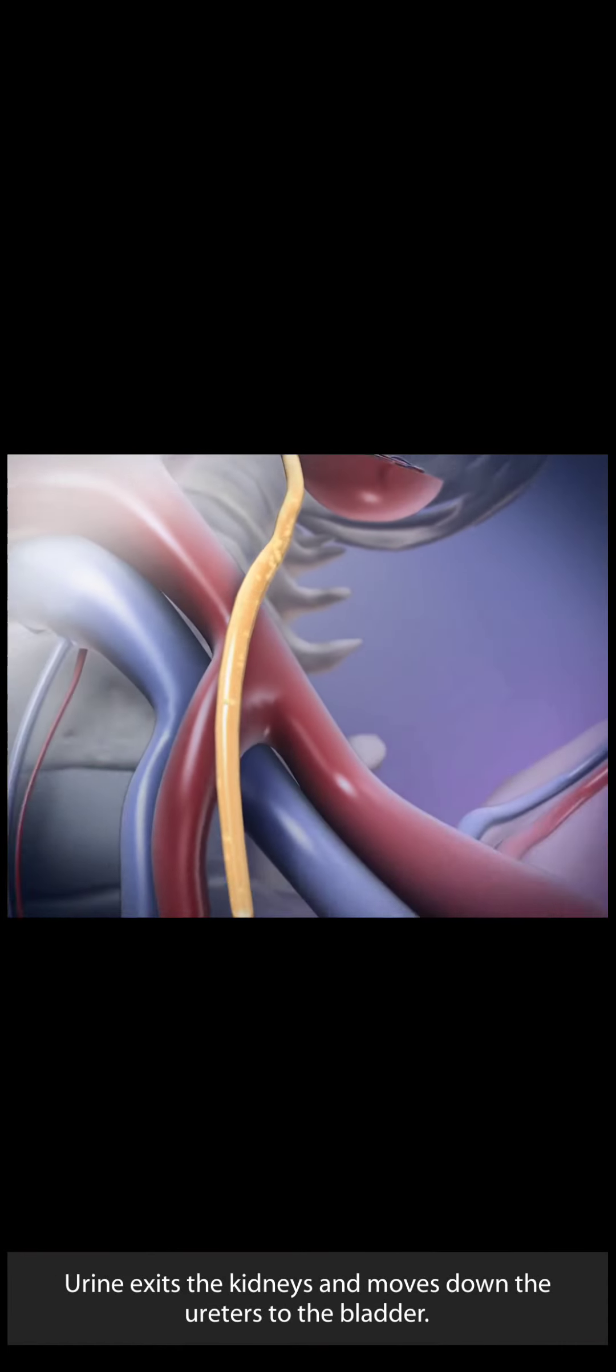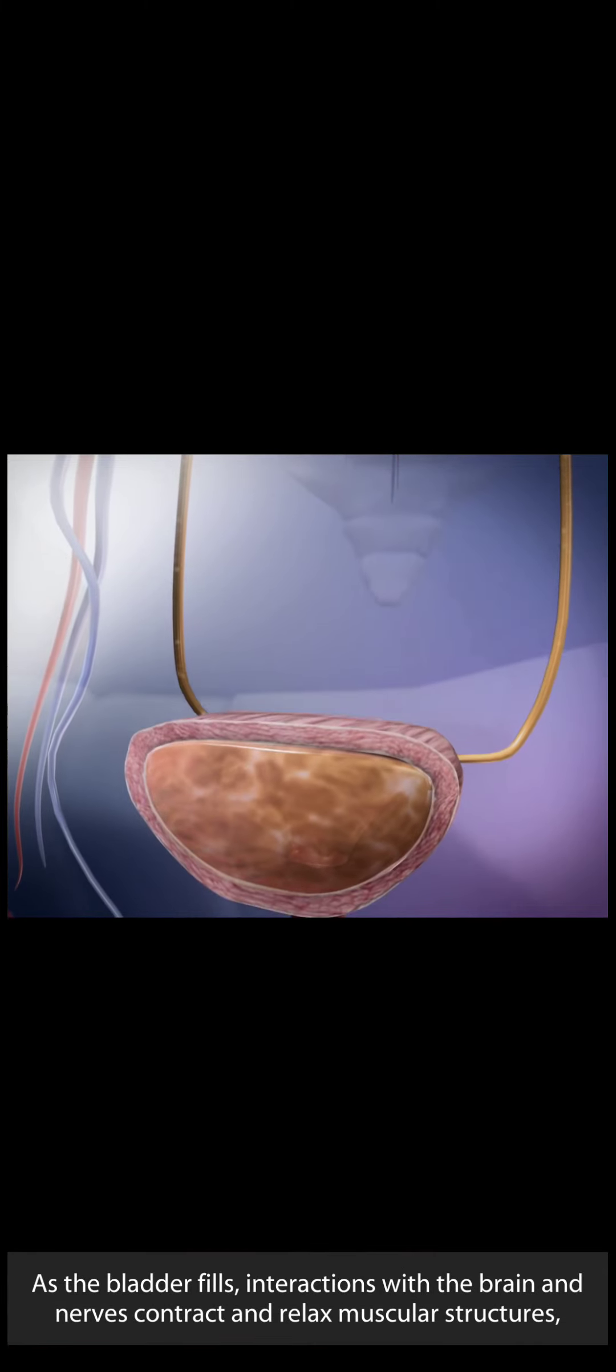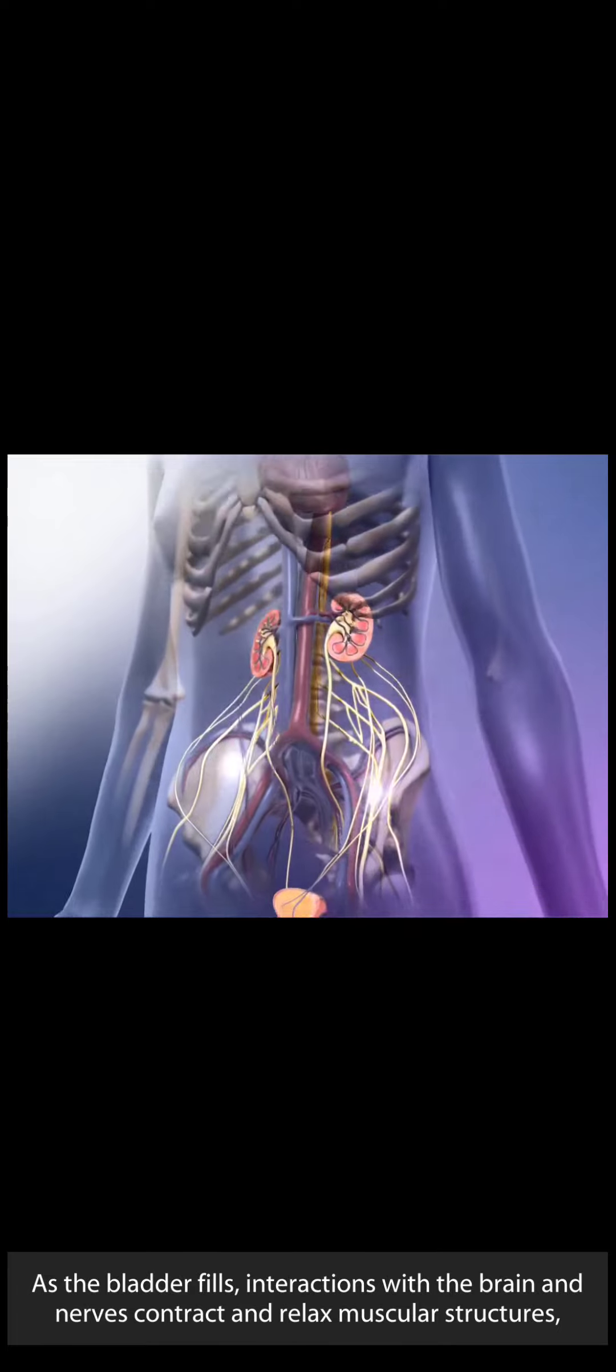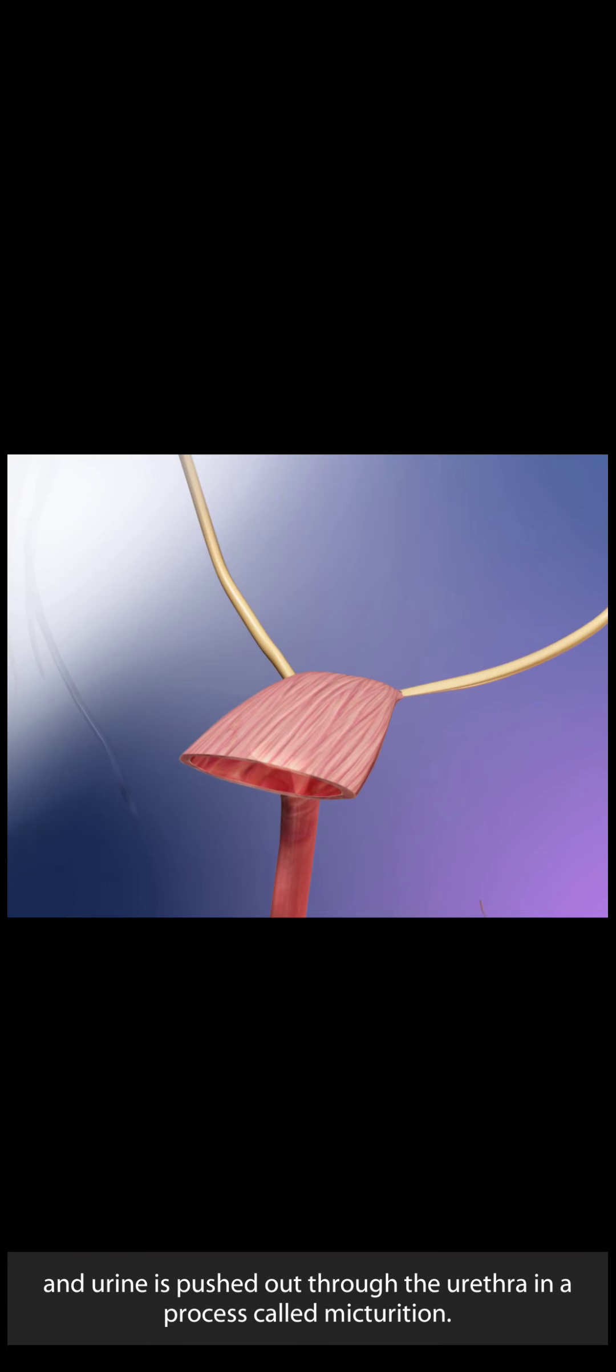Urine exits the kidneys and moves down the ureters to the bladder. As the bladder fills, interactions with the brain and nerves contract and relax muscular structures and urine is pushed out through the urethra in a process called micturition.